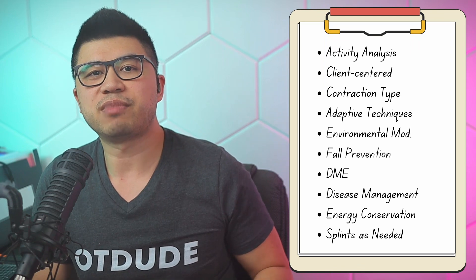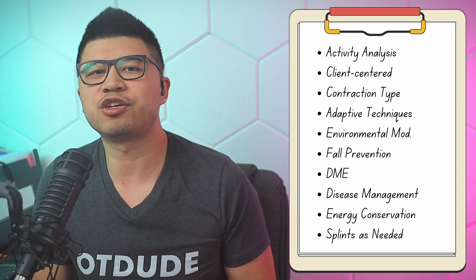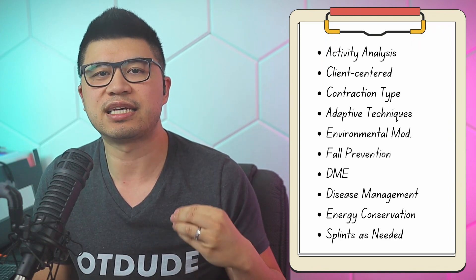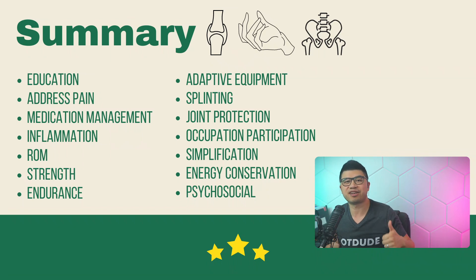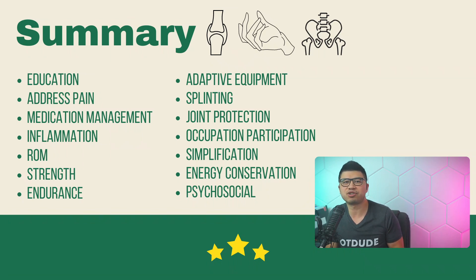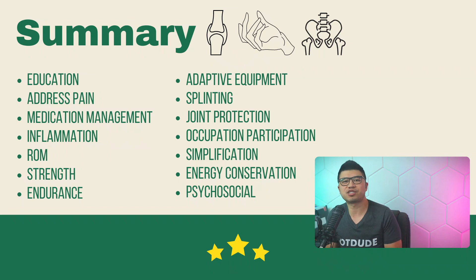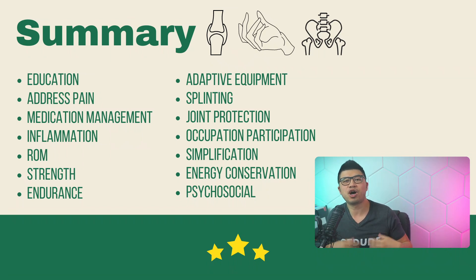On the topic of splints, while patients may be recommended or fabricated splints to support function, they should be encouraged to discontinue use as soon as possible once the condition improves or it is no longer indicated. In summary, osteoarthritis is a chronic and potentially debilitating condition that is not only physical but also psychological and psychosocial. The OT should provide education, address pain and medication management, inflammation, maintain or improve range of motion, strength, and endurance, recommend adaptive equipment, DME, and splints, encourage joint protection, and maximize performance using work simplification, compensation, and energy conservation.